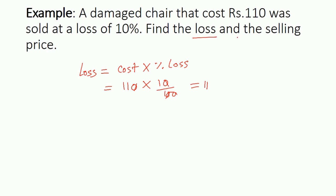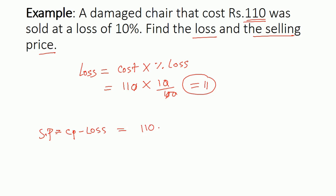We need to find the loss and the selling price. We already found the loss, which is 11 rupees. Now, what will be the selling price? The loss is 11 and the cost price was 110, so selling price equals cost price minus the loss. Here, cost price is 110 minus the loss of 11, giving us 99. That will be the selling price. You see, these problems are really simple once you know the formula — you can easily work through them.